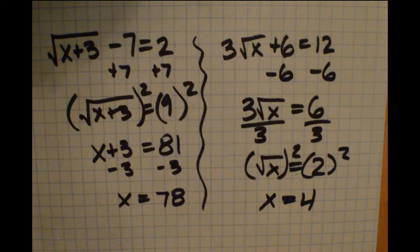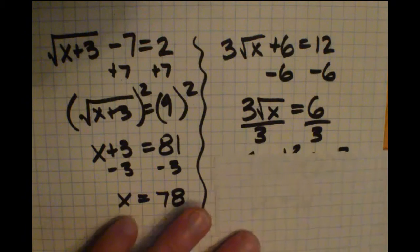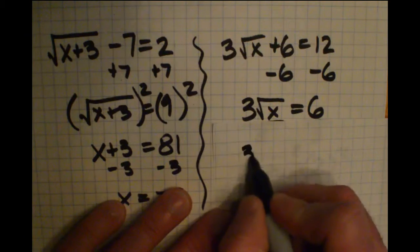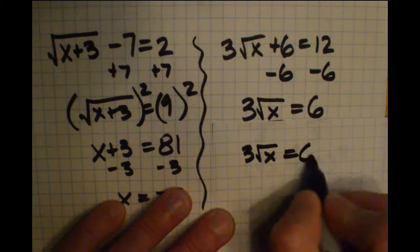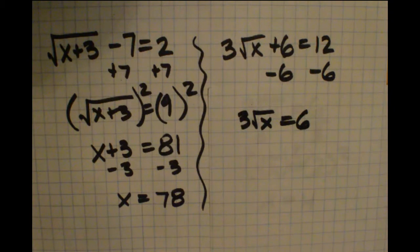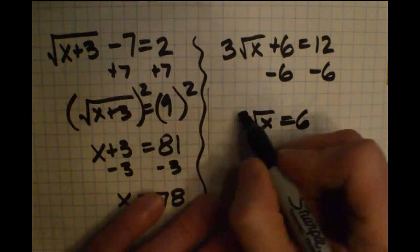Now I want to take a look at what we could have done from this step. So let's go back to this step where we had 3 radical x equals 6. Let's take a look at that. Now I said that we could have squared both sides here. And let's see what happens when you do.